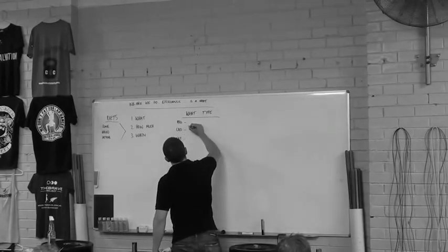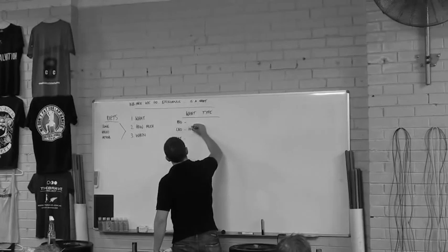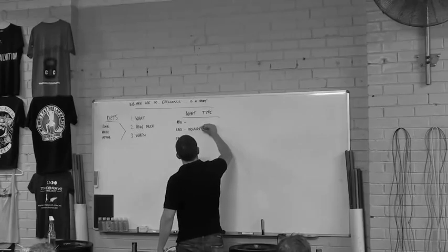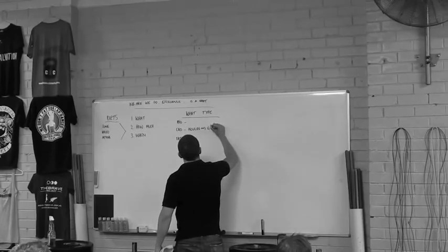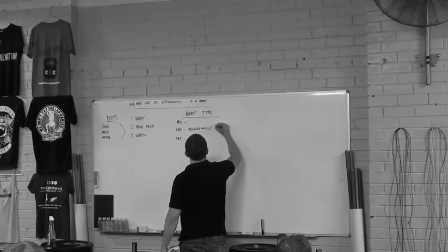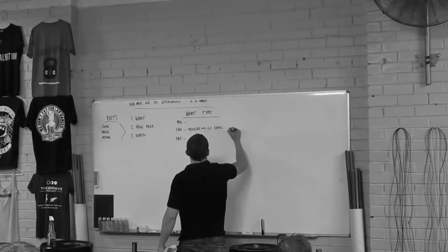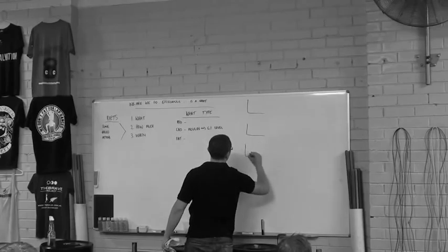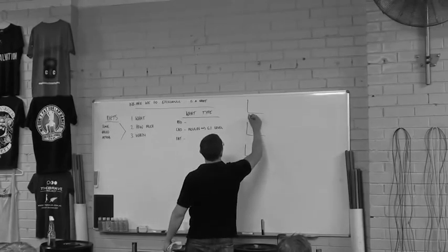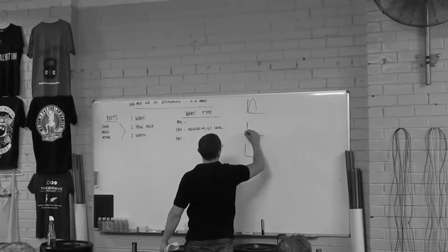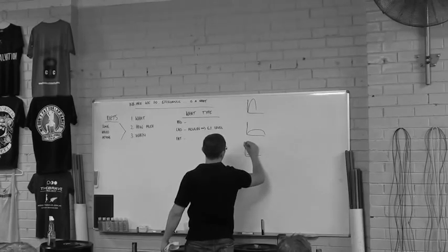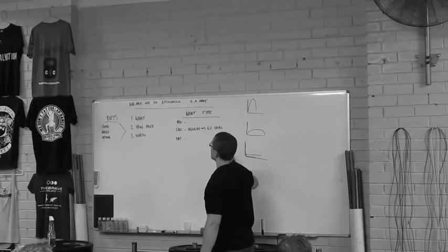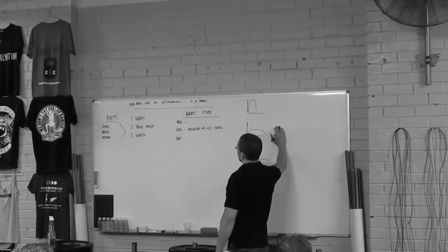So the hormonal response for carbohydrates is a release of insulin. The rate at which this is released is actually told to you by the food on its GI level, the glycemic index level. So loosely you have three types of carbohydrates: low GI, moderate GI, high GI. High GI, insulin and blood sugar spike, moderate, and then low, pretty much straight.